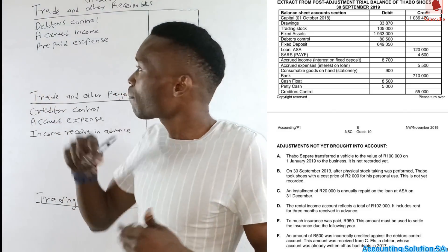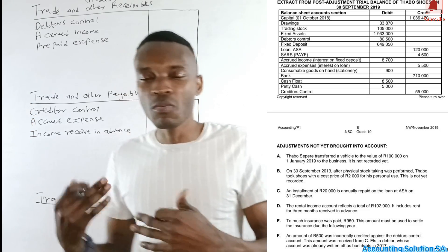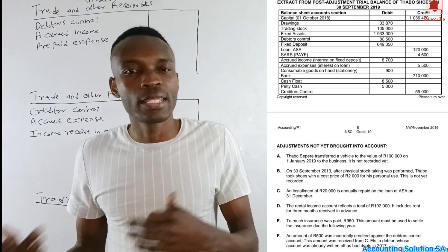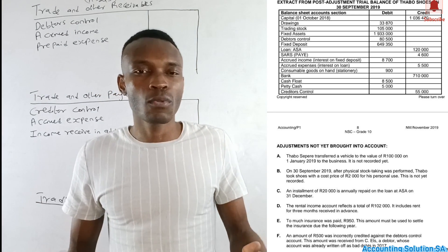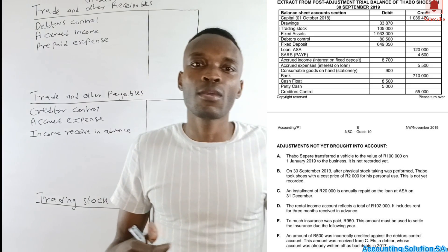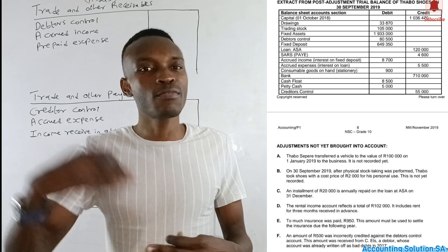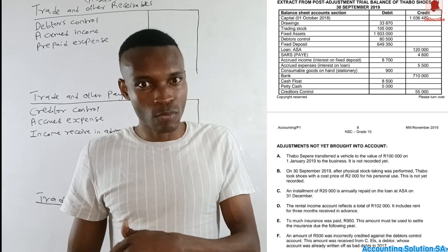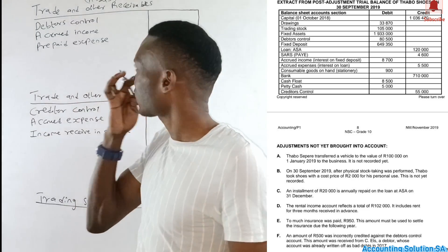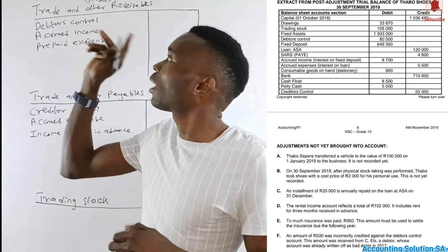Prepaid expense is also an asset. A prepaid expense is an expense paid in advance. For example, if we pay rent for next year, the landlord owes us that money because we have paid for a period we haven't yet used. If we want to move, we can claim that money back — that is why we call it an asset.